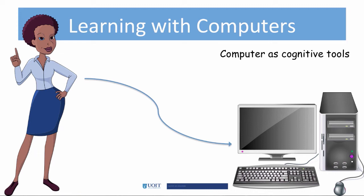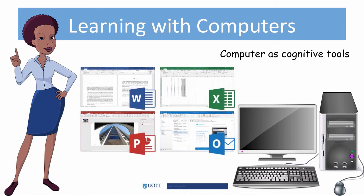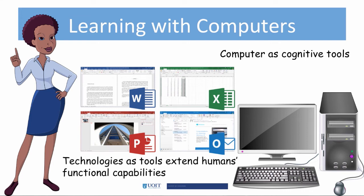Joninson said technologies are applications of human knowledge to real-world problems — they are tools for supporting human needs. Computer-assisted technologies such as word processors, spreadsheets, desktop publishing, and computer-assisted design programs all enhance the productivity of their users. Most knowledge construction and reproduction requires producing communications, designing material, or managing resources. Technologies as tools extend humans' functional capabilities.